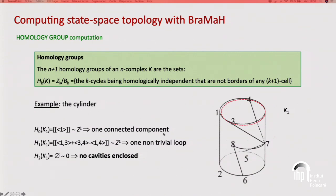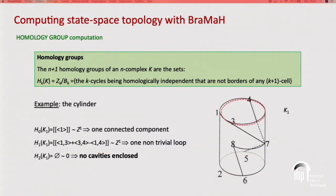H_1 is made of one generator — the non-trivial loop around the cylinder. All cycles are homologically equivalent to this one cycle, meaning the cylinder has one hole or one non-trivial loop. H_2 tells you if there are enclosed cavities: the cylinder has none. If we turn the cylinder into a torus by relabeling and gluing the bottom points, H_0 is the same (one connected component), but H_1 has two non-trivial loops, and H_2 has one enclosed cavity — different from the cylinder.